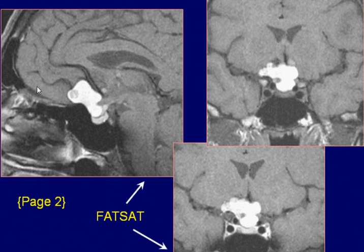Sagittal post-GAD fat saturation T1-weighted image demonstrates the lesion as a hyperintensity area in the supra-sellar region with a slightly lobulated outline.